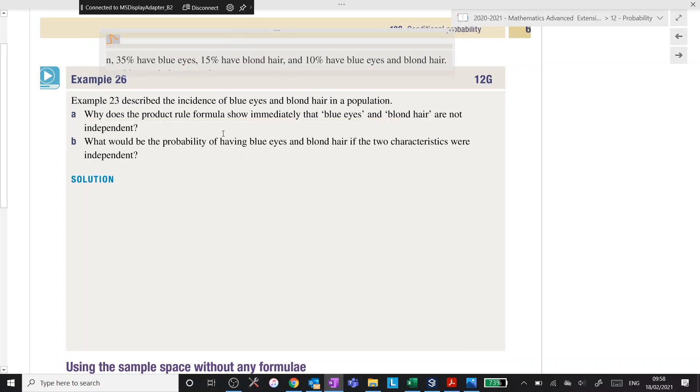Example 23 described the incidence of blue eyes and blonde hair in a population. What does the product rule formula show immediately that blue eyes and blonde hair, or why does it show that it's not independent? Remember what the product rule is saying. For them to be independent, there's a lot of mumbling going on.